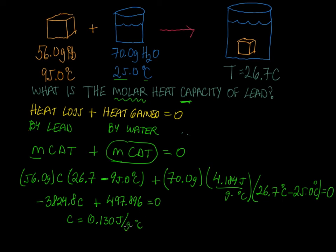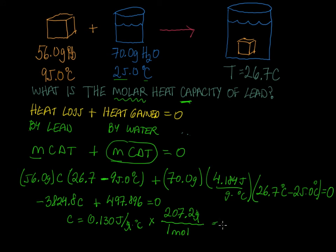Now the problem asks for the molar heat capacity, so we just need to convert grams to moles. Looking on the periodic table, 207.2 grams is the atomic mass of lead. The grams cancel, and we're left with 26.97, or 27.0 rounded to three significant figures, in units of joules per mole per degree Celsius.